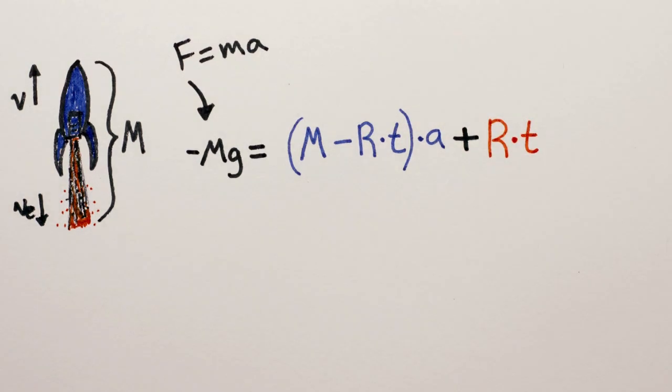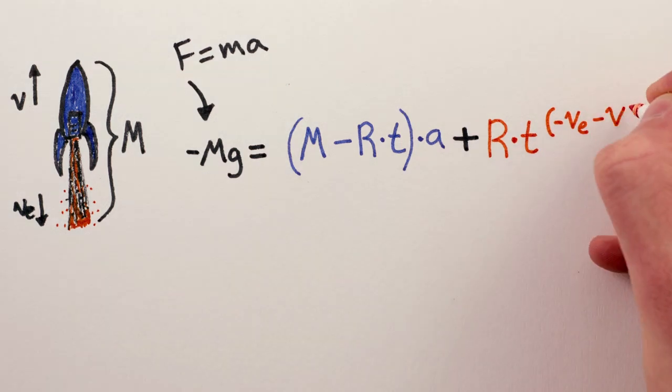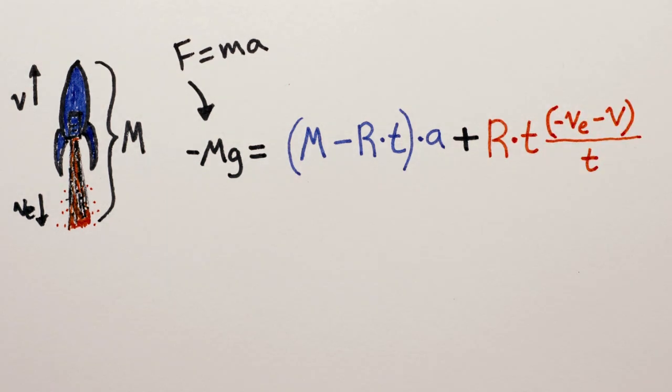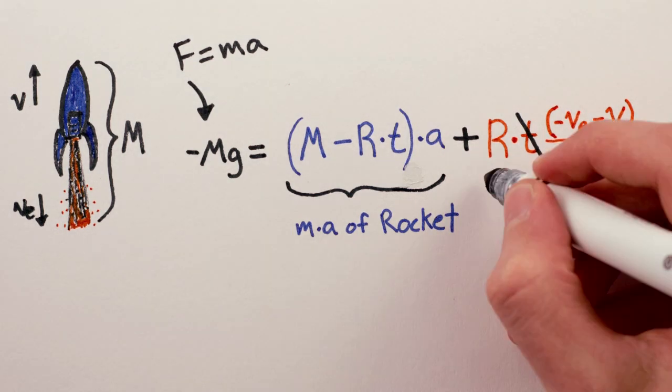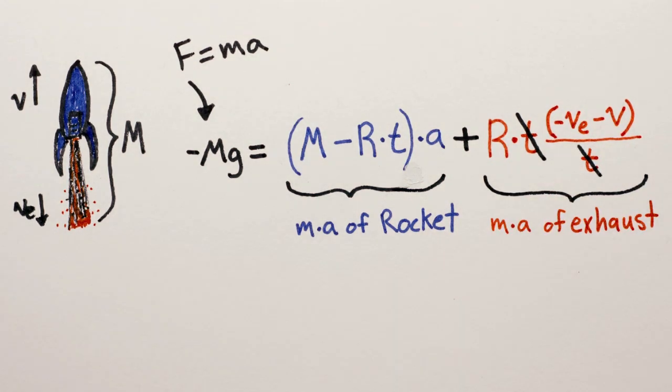So now what's the acceleration of the exhaust? Well, the definition of acceleration is the change of velocity in a given time. And the exhaust goes from moving with the rocket at velocity v before it's expelled to moving with the velocity of the exhaust after it's expelled. The change, or difference between those, is negative ve. It's negative because the exhaust is moving down. Minus v divided by the amount of time that's passed. So the t's cancel, and this equation tells us how the whole rocket plus exhaust system moves, where this part is the mass times acceleration of the rocket itself, and this part is the mass times acceleration of the exhaust.